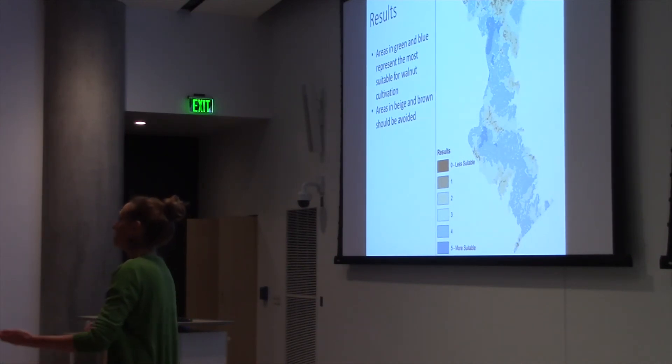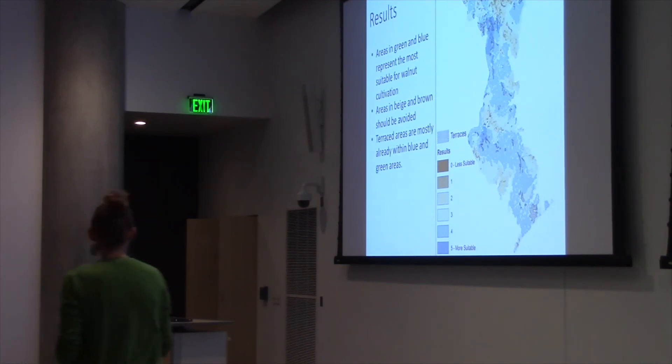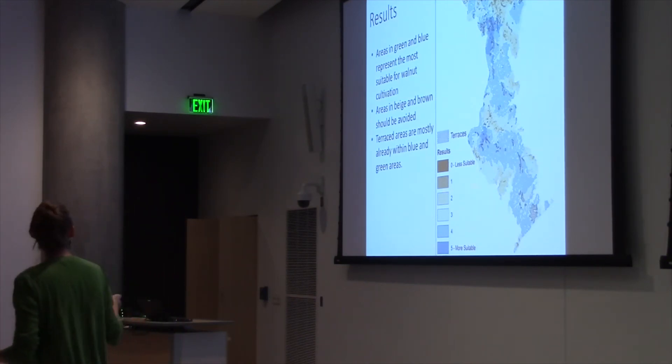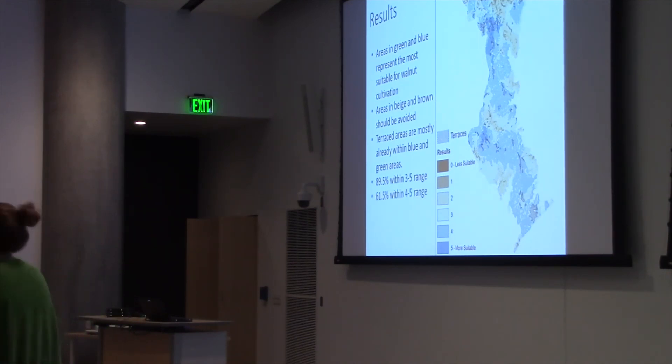Lauren, you talked so much about the terraces earlier. What about the terraces? Don't worry. I digitized the terraces for the entire area, and you can kind of visually just see that most of the terraces kind of fall in this blue, in these sort of blue patches here. But who likes just doing visual analysis? We need to get some numbers in there. 89.5% of the terraces fall within these blue-green ranges. And if we take out the three, we still get 61.5% of the terraces fall on either a four or a five for suitability.